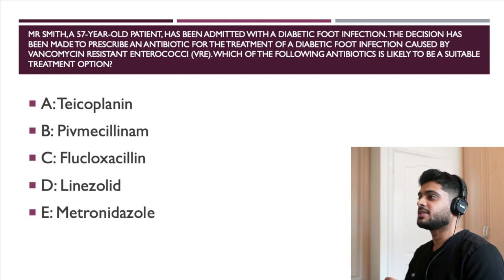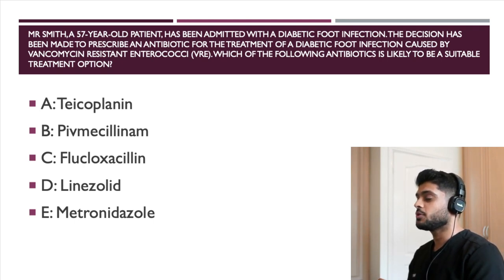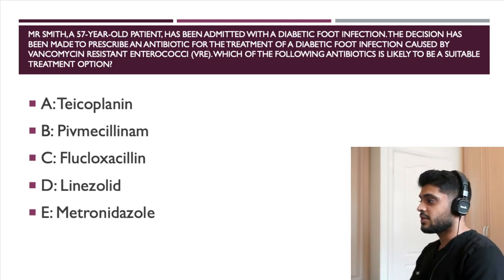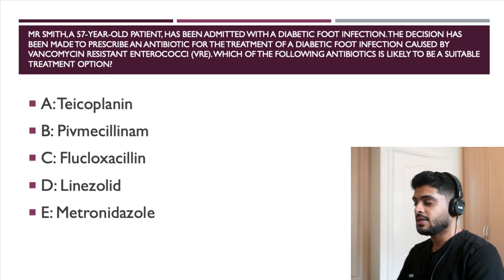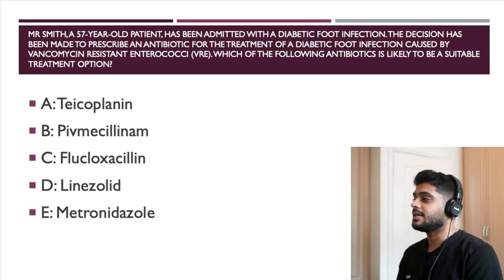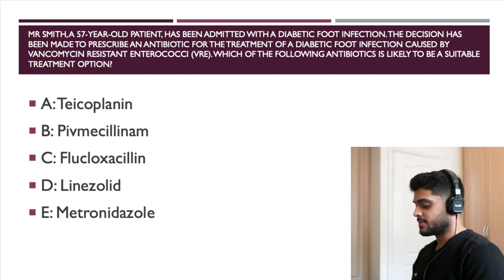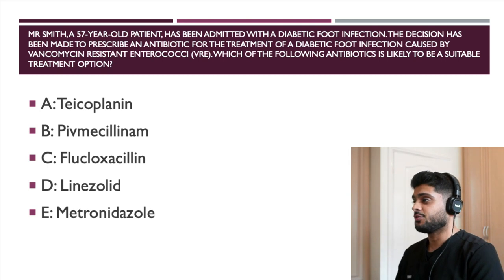We want to identify which antibiotic is likely to be suitable among the options — this is very much how the GPHC frames exam questions. The first option is teicoplanin. Teicoplanin is a glycopeptide belonging to the same antibiotic family as vancomycin, and therefore vancomycin resistant enterococci are also likely to be resistant to teicoplanin. Pivmecillinam is normally used for urinary tract infections and is not effective against enterococci species.